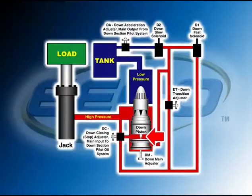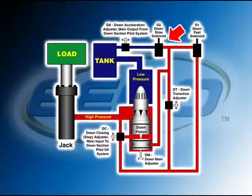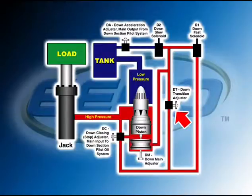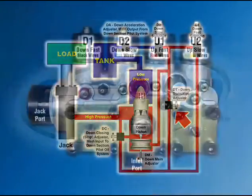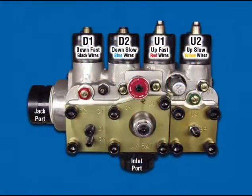As a result, the down piston starts to close. The closing rate of the down piston controls down transition and is a function of oil flow through the D2 solenoid valve. The DT adjuster provides additional control over the closing rate of the down piston, therefore additional control over the down transition. Now, let's review how to adjust DT if necessary.